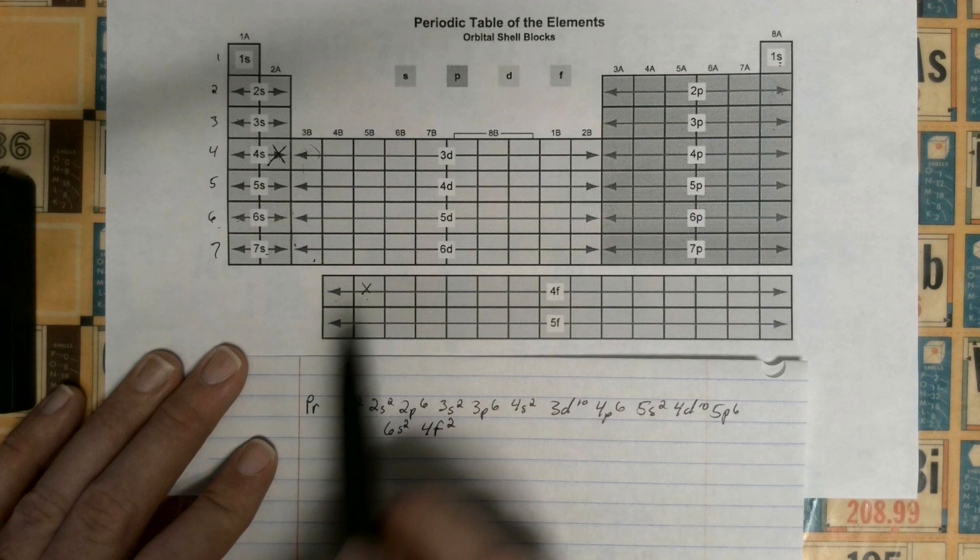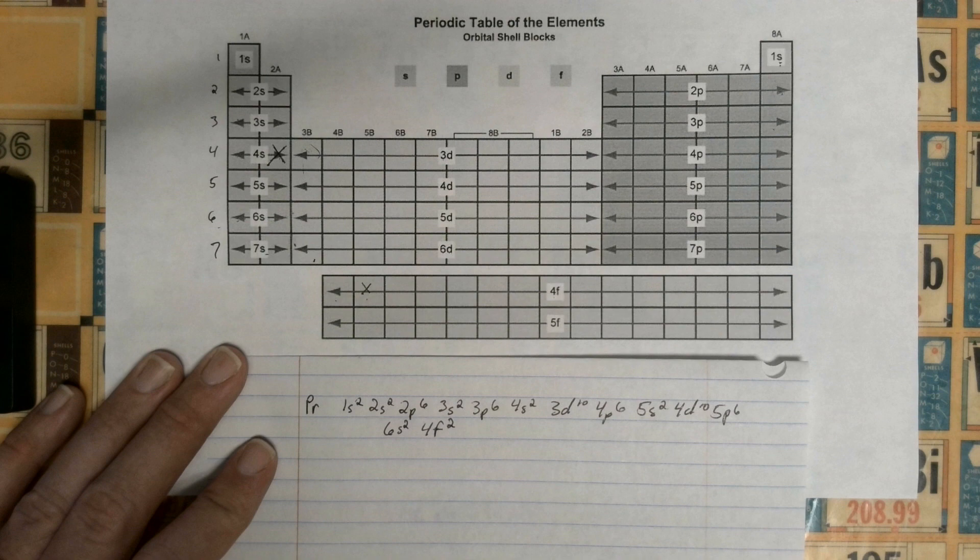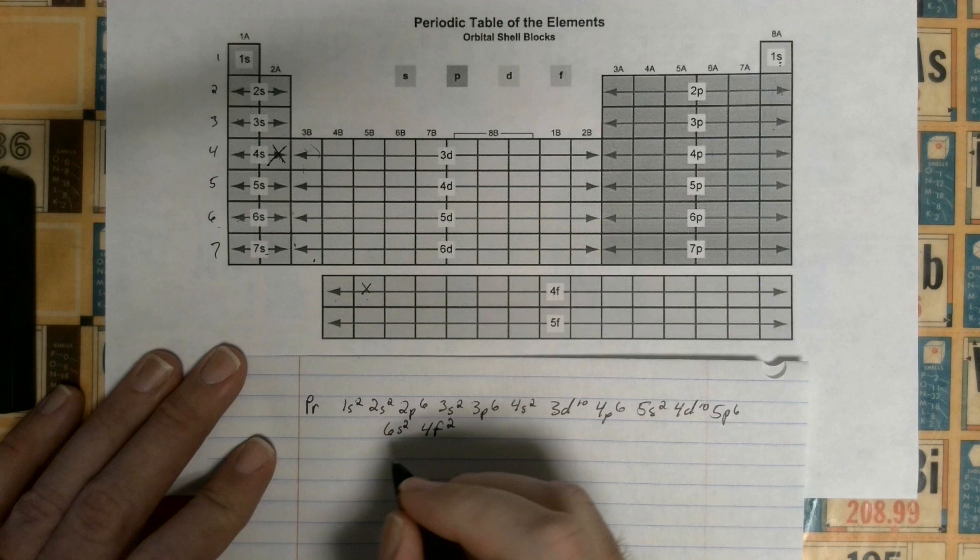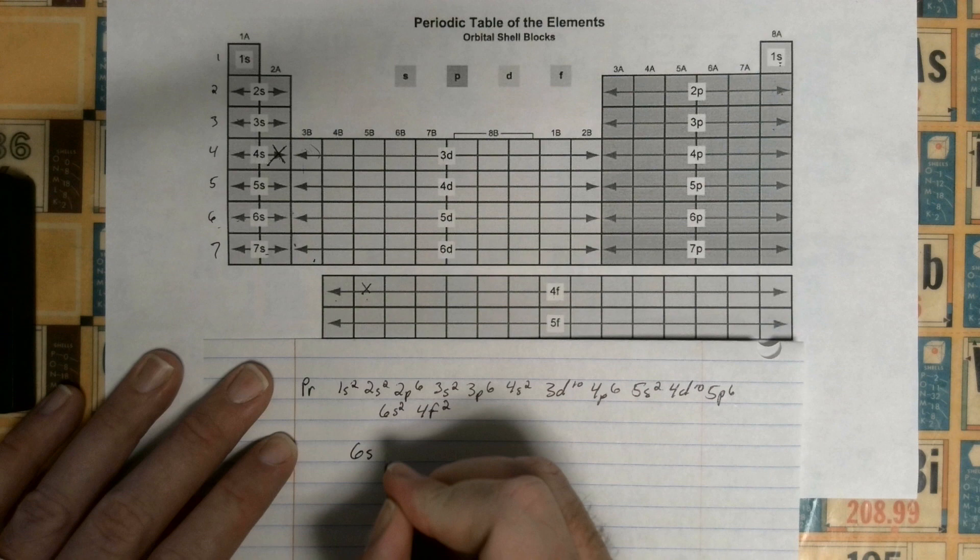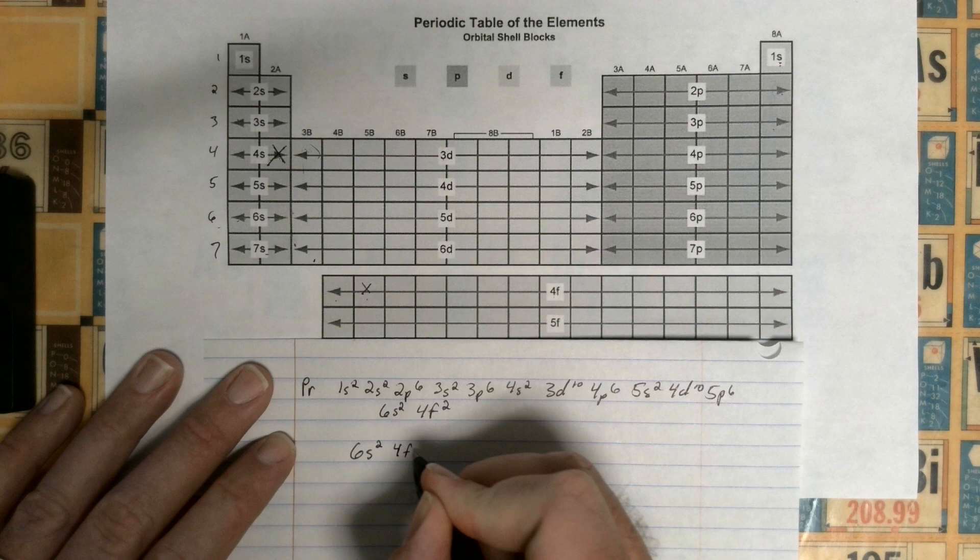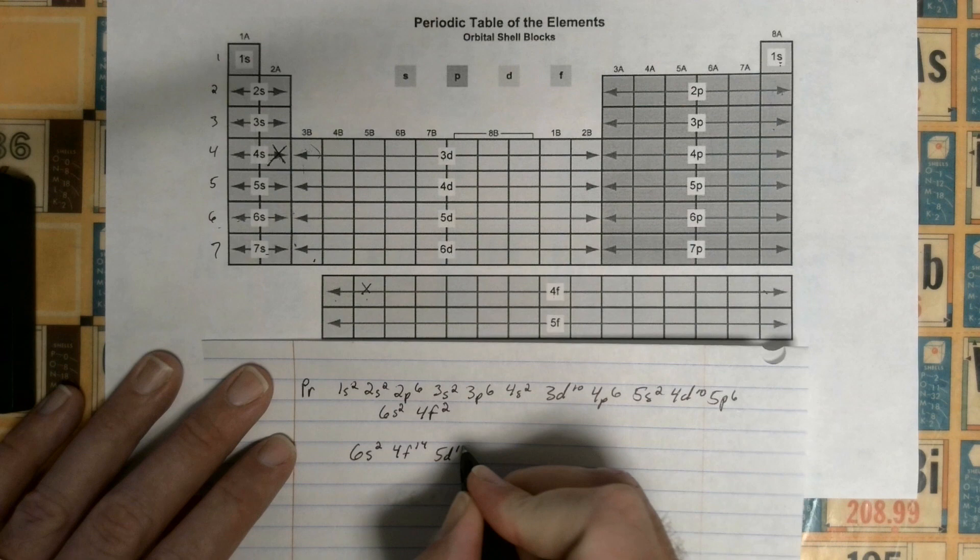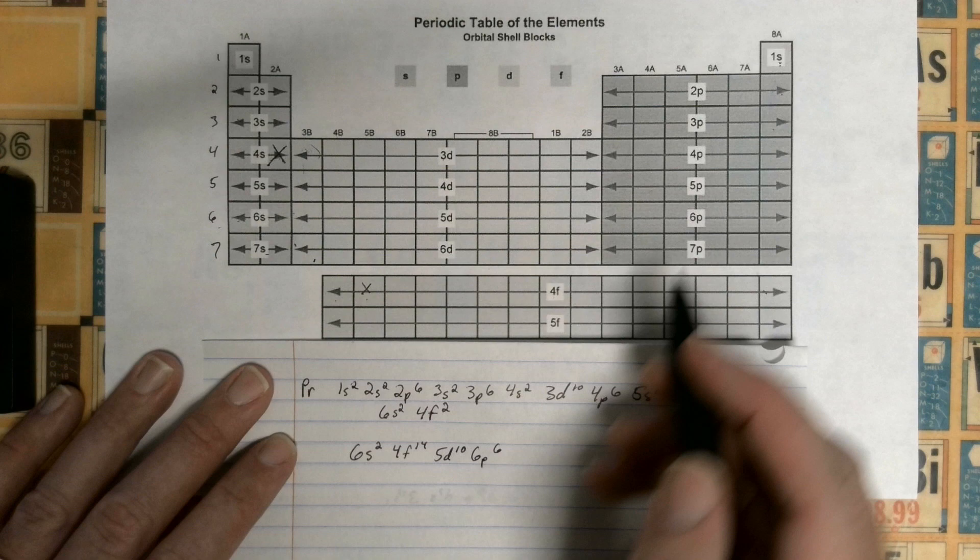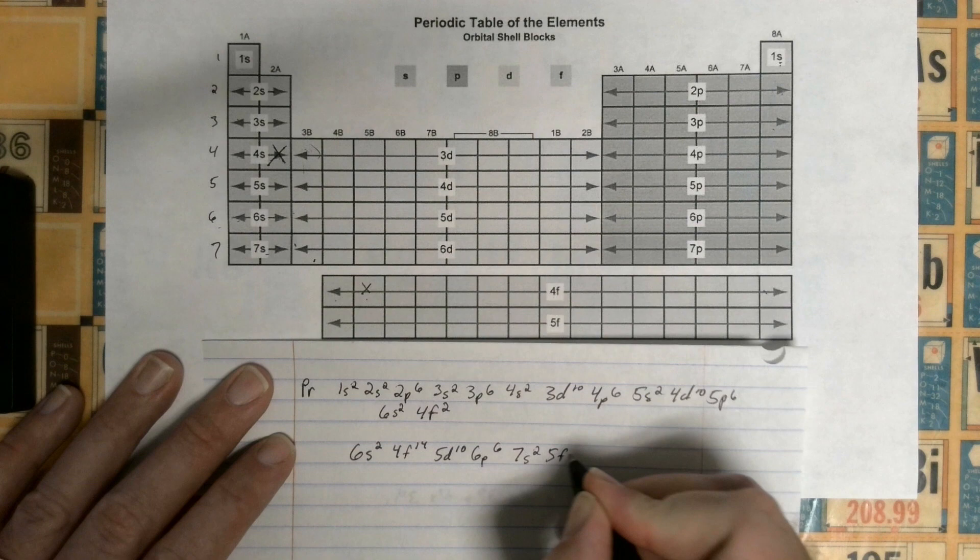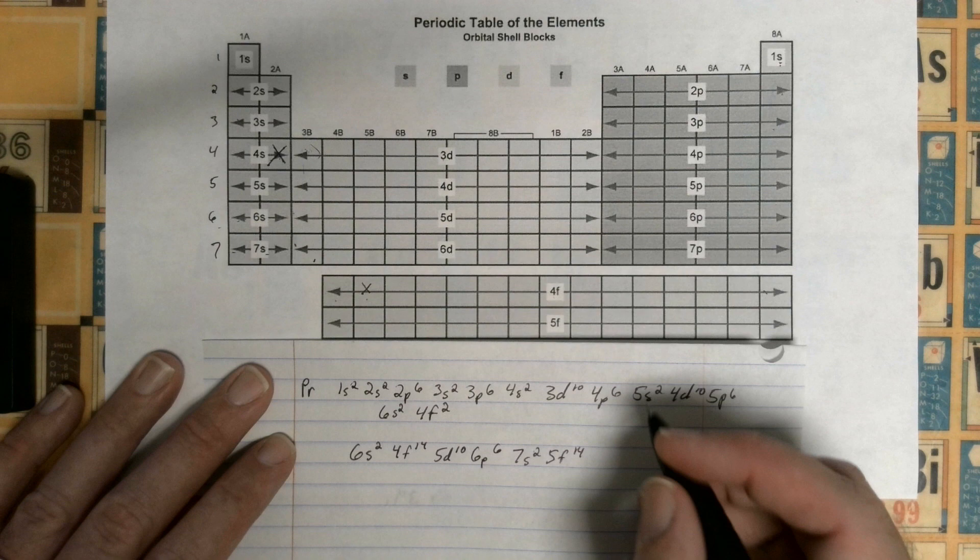Now if we had to keep going, we're going to go 6s2. If I wanted to continue going, then we go 4f, and the f can hold up to 14, so it'd be 4f14. Then after the f, we end here, so then we go back up to 5d, so this would be 5d10, and then 6p6.